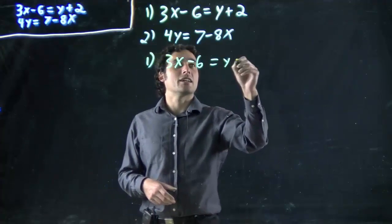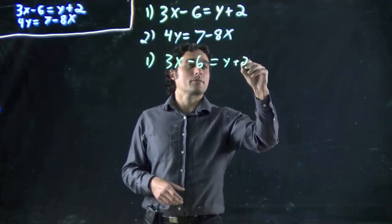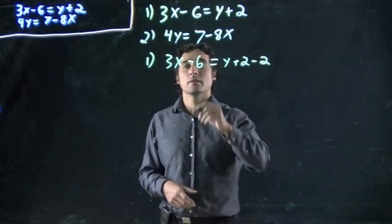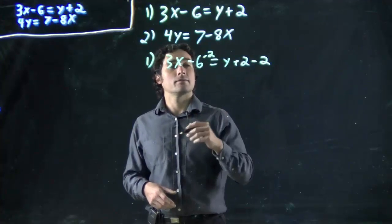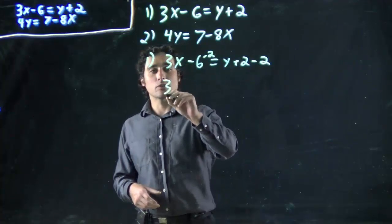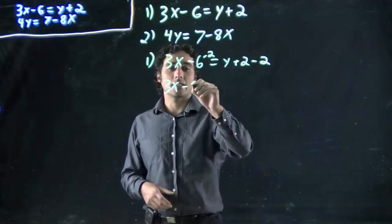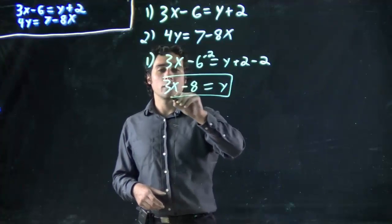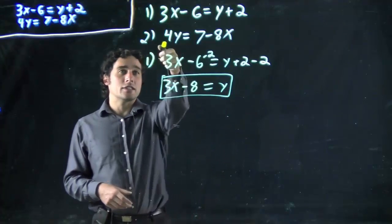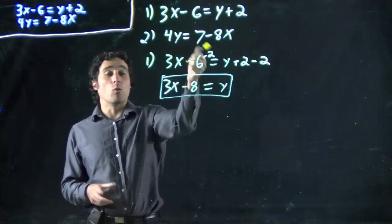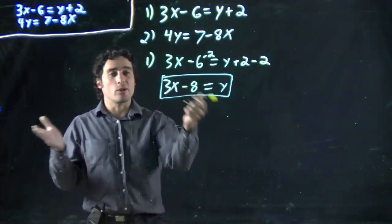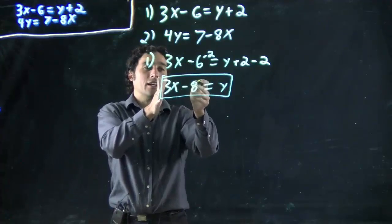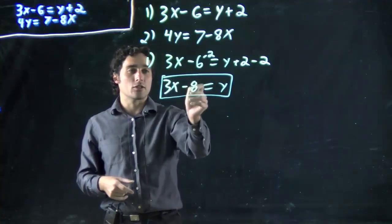I've got to get y on its own. So I'm taking equation 1 and I'm going to try and solve for y. I want to get rid of the plus 2, so I subtract 2 from both sides. This becomes 3x minus 6 minus 2 is minus 8, all of that equal to y. So I now have an equation where I know what y is.